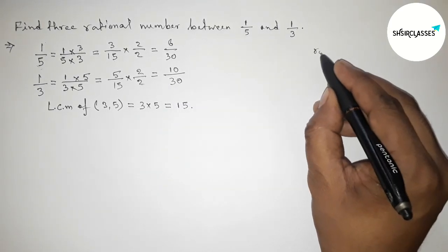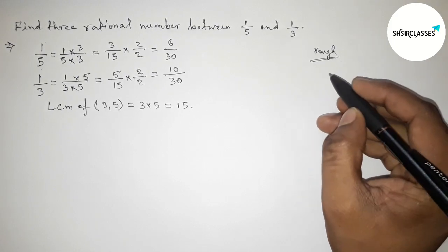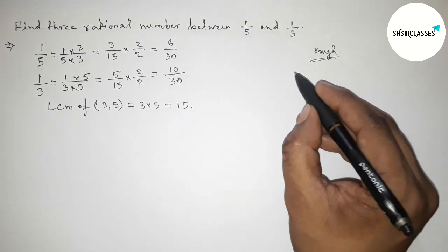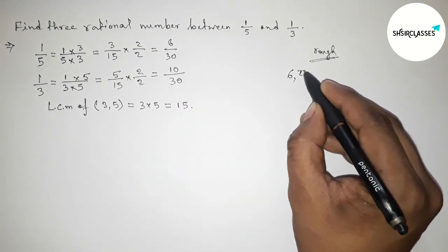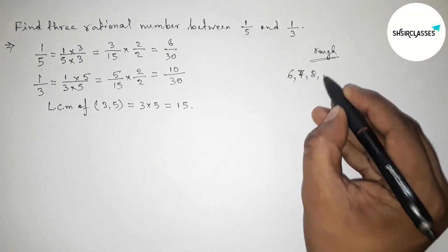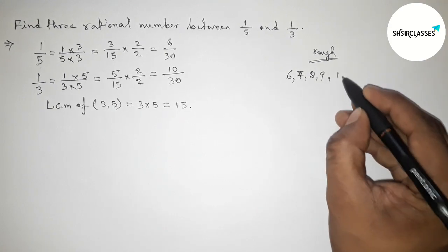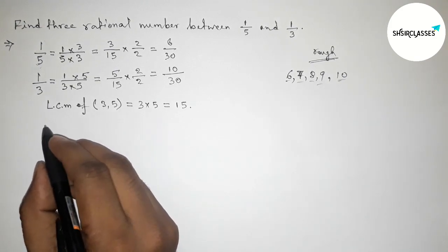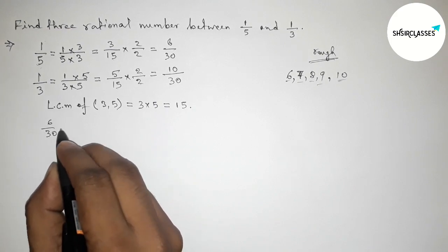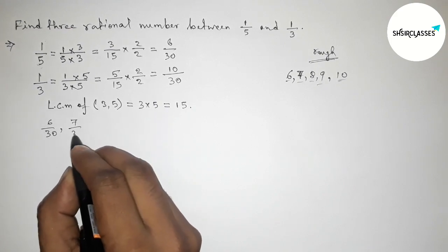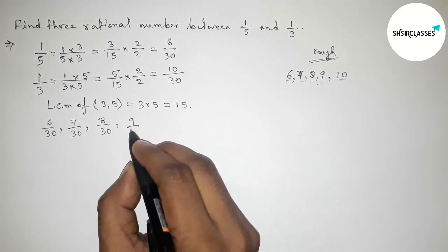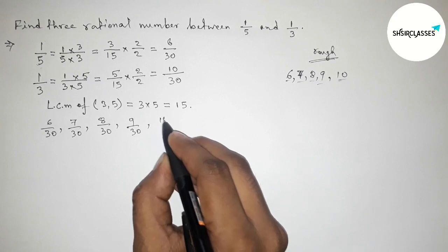Roughly discussing here, denominators are equal. So now between 6 to 10 we can get four integers. Sorry, we can get three integers. By these three integers we can form three rational numbers.